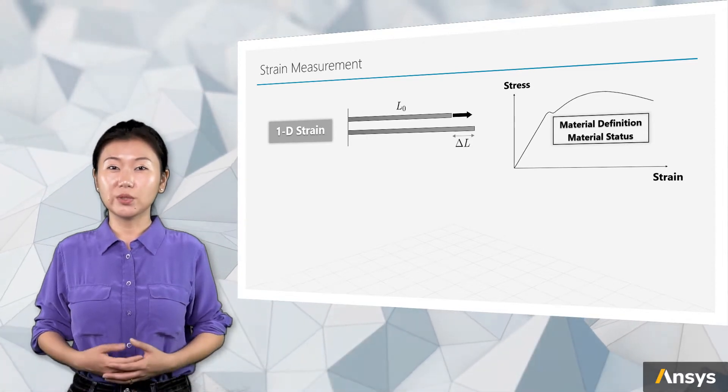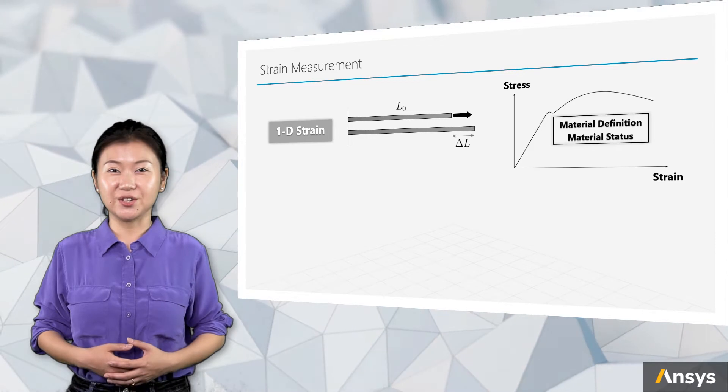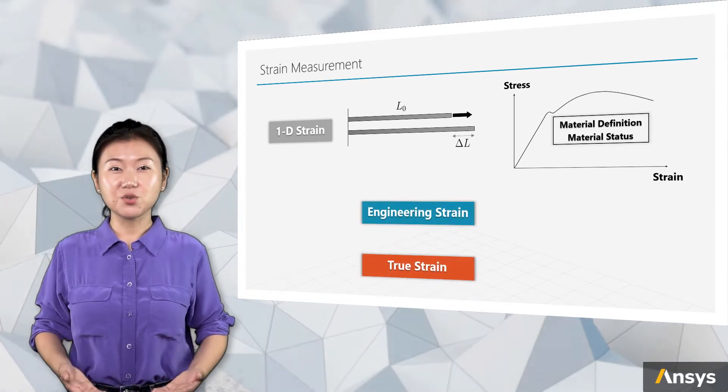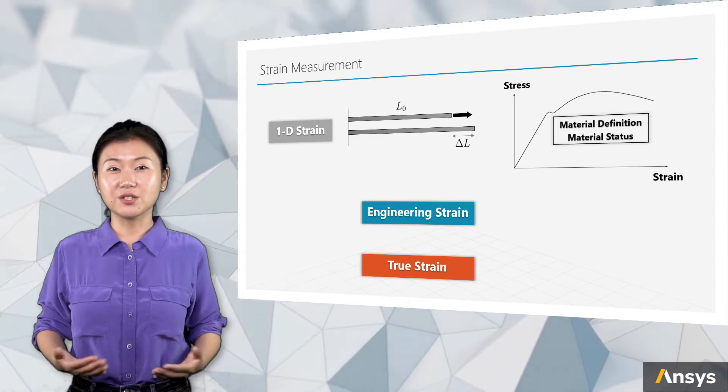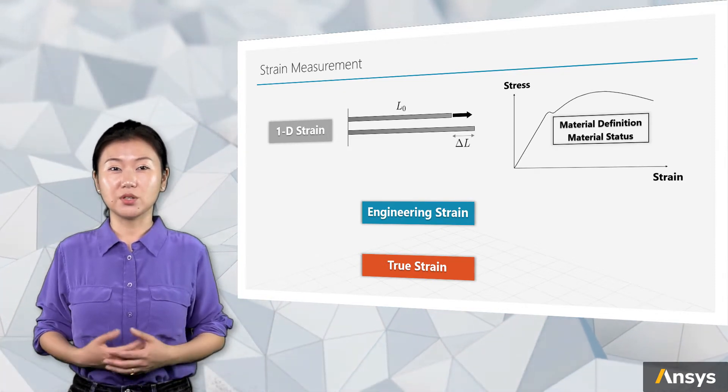Here we will discuss two widely used strain definitions in engineering field: the engineering strain and the true strain. We're going to explain the mathematical formulations of the two strains and the essential differences between them.